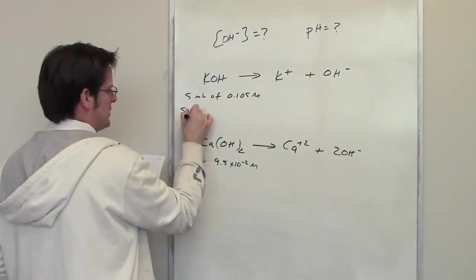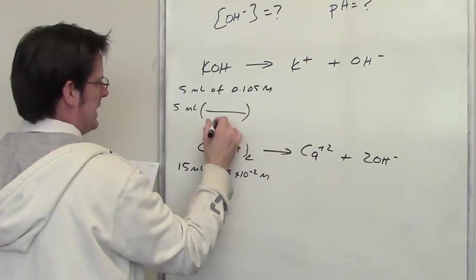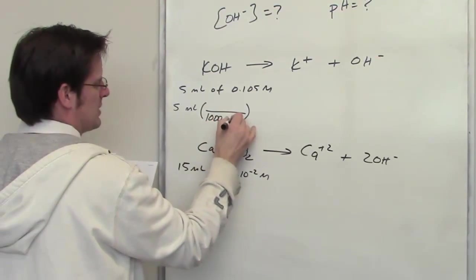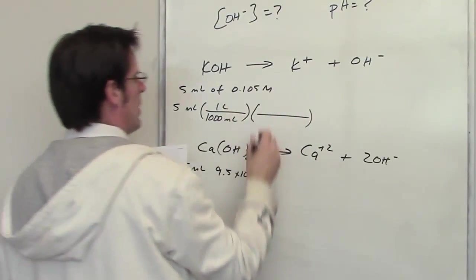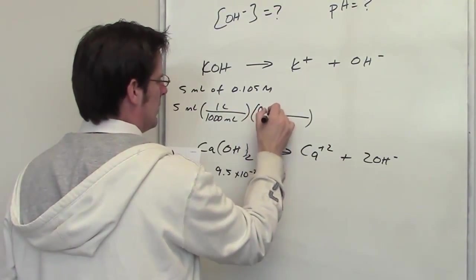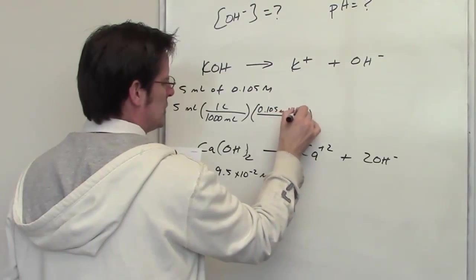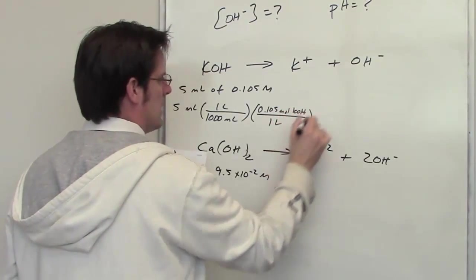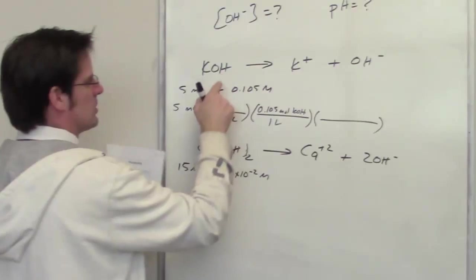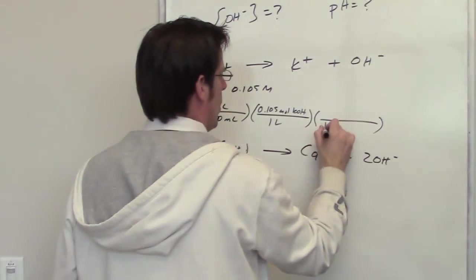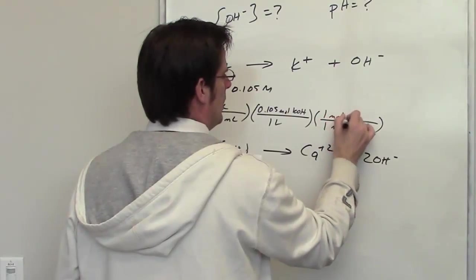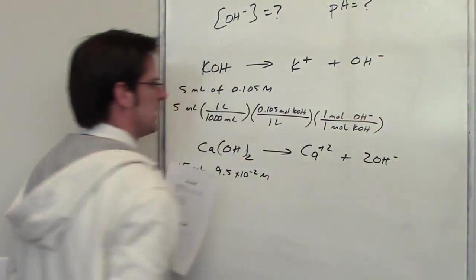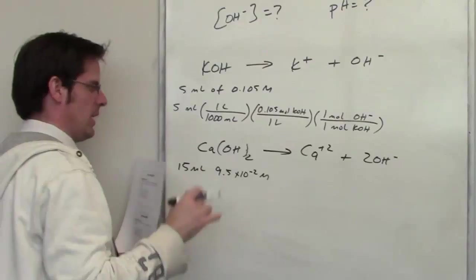5 mils, I need to convert that to liters. I know that 1,000 milliliters are present in one liter. I've got this solution, 0.105 moles of KOH in one liter. I also know from the stoichiometry in this equation that I have one mole of KOH for every one mole of hydroxide. I'll let you take a look at this for a moment. Now I'll start doing stuff.